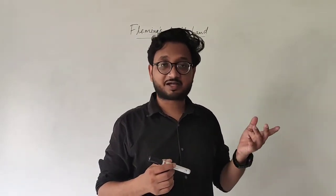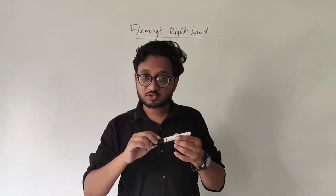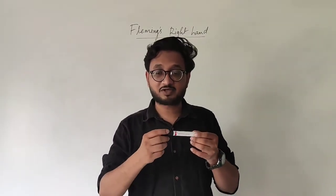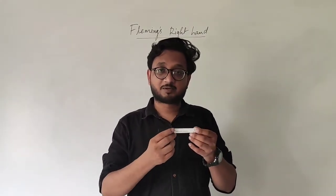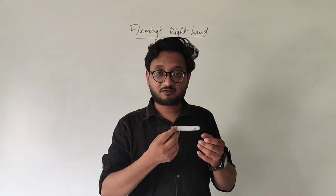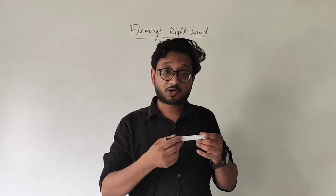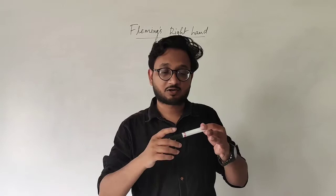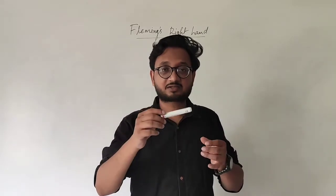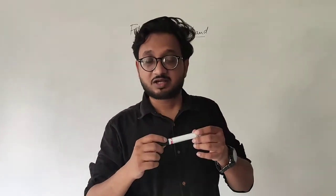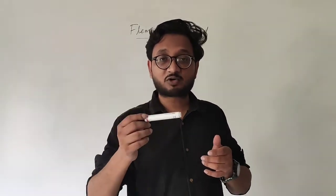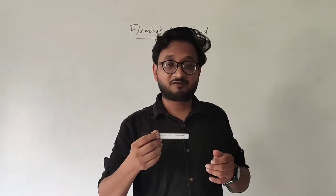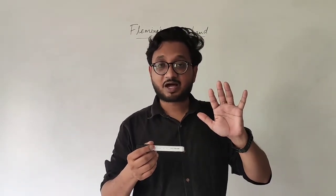Previously we studied that when electricity is passed to a conductor it generates a magnetic effect, and because of which the needle of the magnet showed deflection. Or if the magnetic field is strong, then the conductor experiences a force, and for that force — in which direction the conductor will move — we had Fleming's left hand rule.